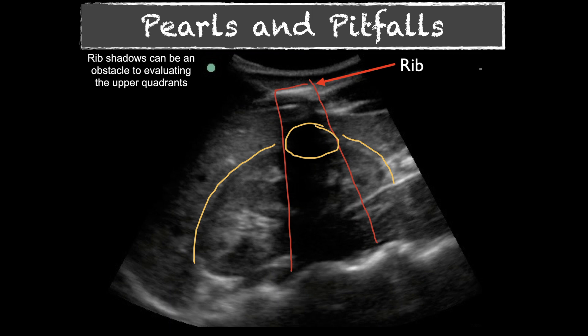You can drag the probe one way and angle the opposite — drag toward the feet and angle back toward the head, or vice versa. You can also rotate the probe to match the rib spaces and look through those. That gets a little difficult with a curvilinear probe, but it is an option. You could also switch to a phased array, though you lose some lateral resolution. Staying with a curvilinear and fanning through the space is the preferred approach.